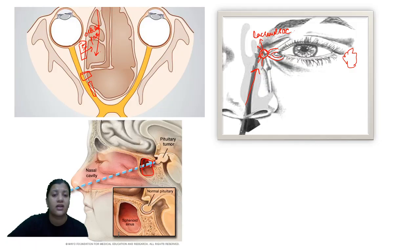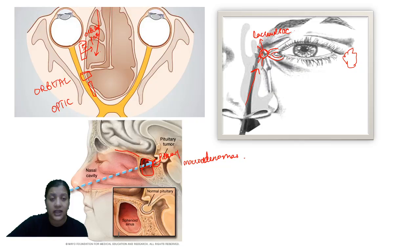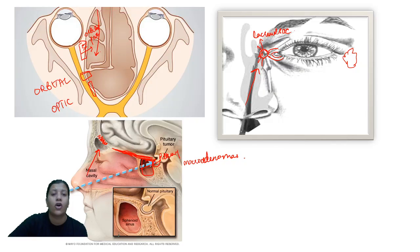From the sphenoid sinus, you can reach the sella turcica and treat pituitary macroadenomas. These are the various extended approaches of transnaseal endoscopic surgeries — for orbital pathologies, optic nerve pathologies, lacrimal sac, pituitary gland, and CSF leaks. Only the posterior wall of the frontal sinus is difficult to reach transnasally. Everything else, from the planum sphenoid to the roof of the sphenoid, can be treated by transnaseal endoscopic approach.